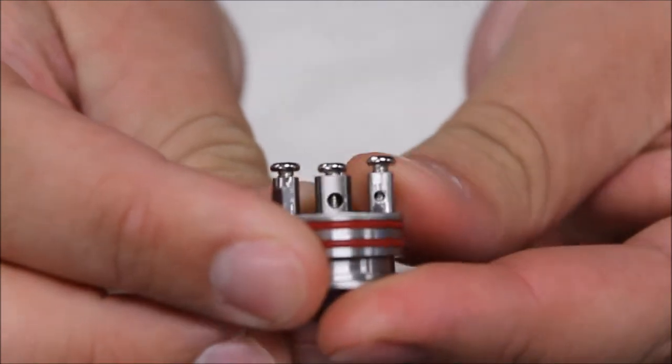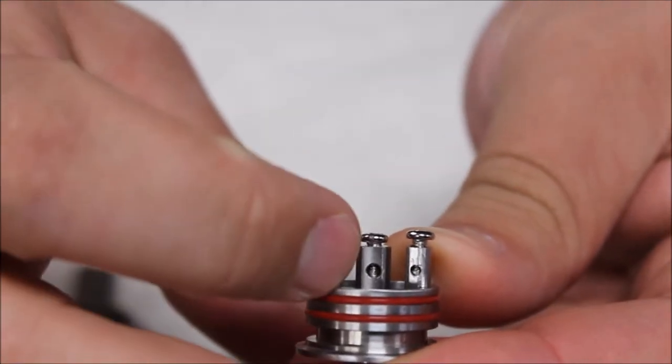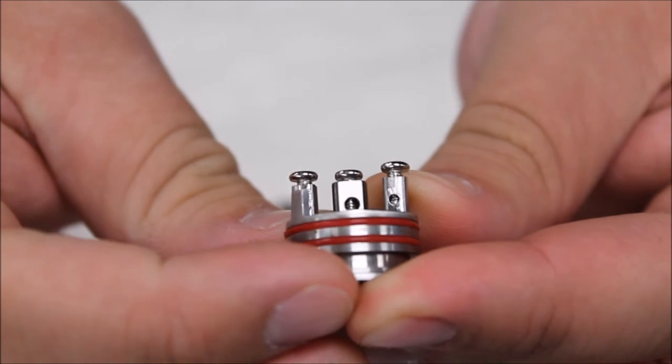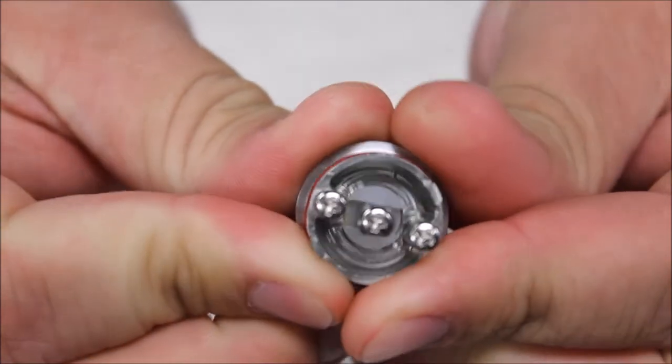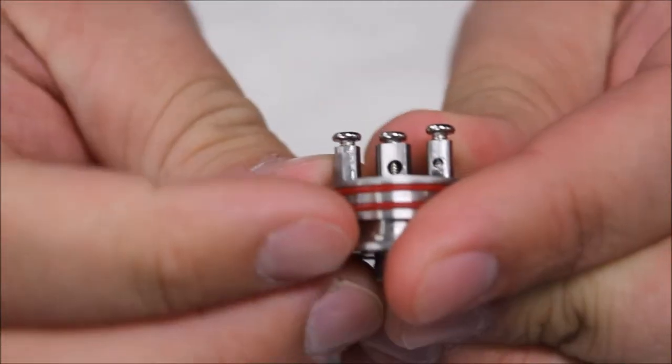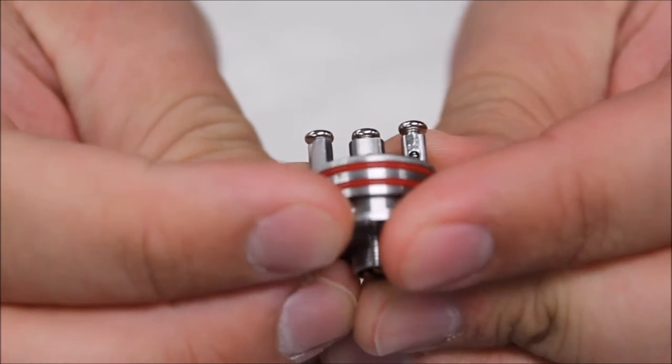Same thing as the Asmodus Atomizer except the middle center post isn't split. It's just a regular 3 post design. Holes are pretty big so you can do multiple builds on there.